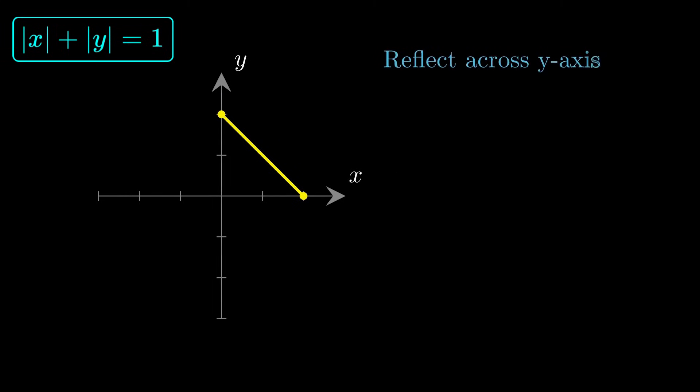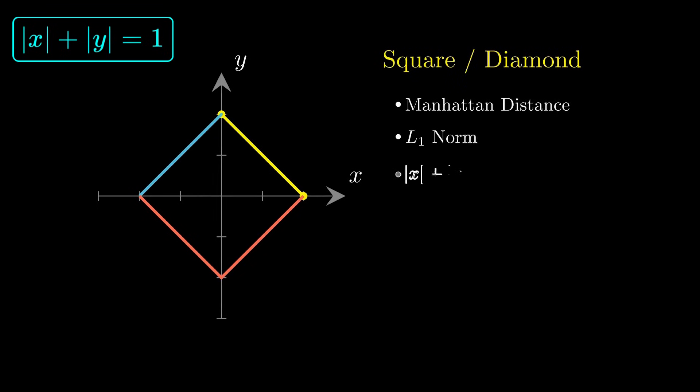Now reflect this across the y-axis. Replacing x with negative x gives absolute negative x plus y equals 1. But absolute negative x is identical to absolute x, so the reflected piece has exactly the same shape. Next, reflect both segments across the x-axis. That creates absolute x plus absolute negative y equals 1. And again, absolute negative y is the same as absolute y. So the bottom two edges fit perfectly into place.